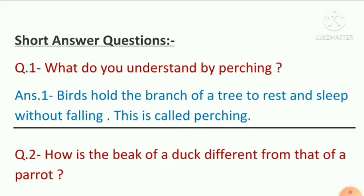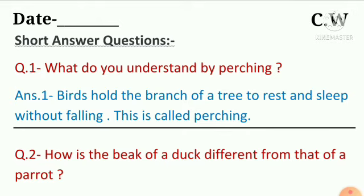For this, you have to open a fresh page in your science notebook. On the top left corner, you will write today's date. And in the right corner, you will write CW. After that, in the first line, you will write the heading: Short Answer Questions. And then you will underline that heading. Heading ko underline karna hai.